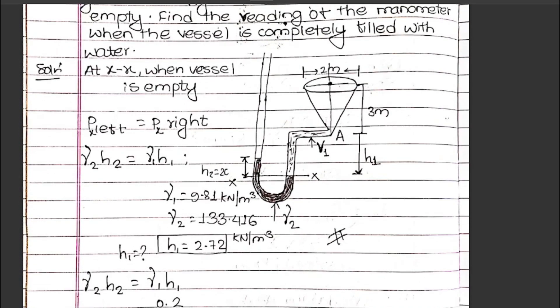Looking at the figure, the manometer is connected. The vessel is initially three meters in height. When the vessel is empty, we need to find the initial manometer reading. First, let's consider the area of the section.